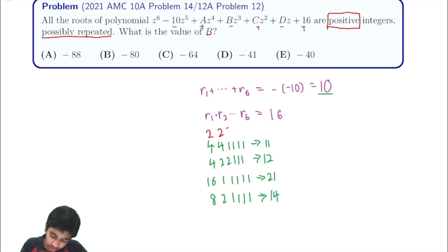So then we see the number has to be 2, 2, 2, 2, 1, 1, which has a sum of 10. So that does work. So therefore, we see that these have to be the roots. And we can actually check that no other possibility will work because we just listed them all out. So we know that the 6 roots have to be 4 twos and 2 ones.